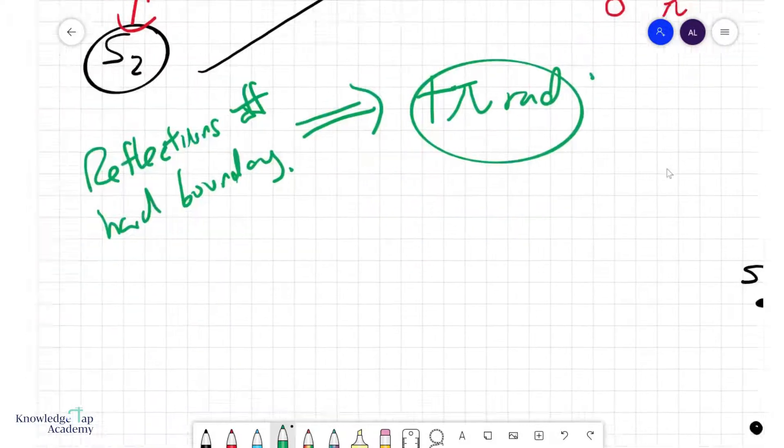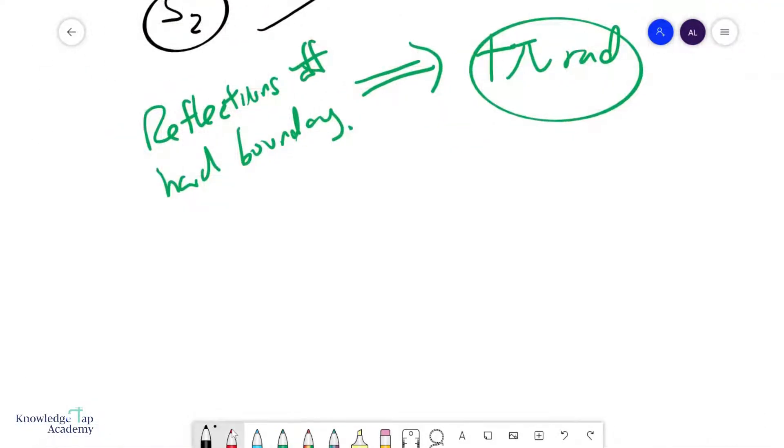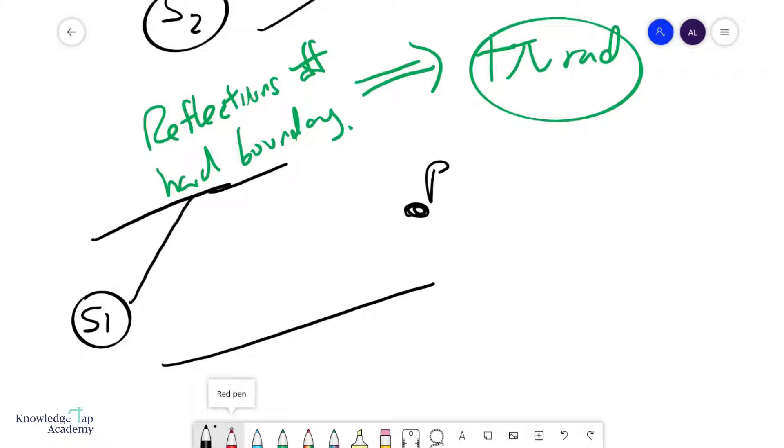So for example, if I had a wave that goes something like this, okay, so this is my source, this is my point P, and the wave is a funny one, it goes like this, bounce, bounce here, you basically add π here, you add π here.